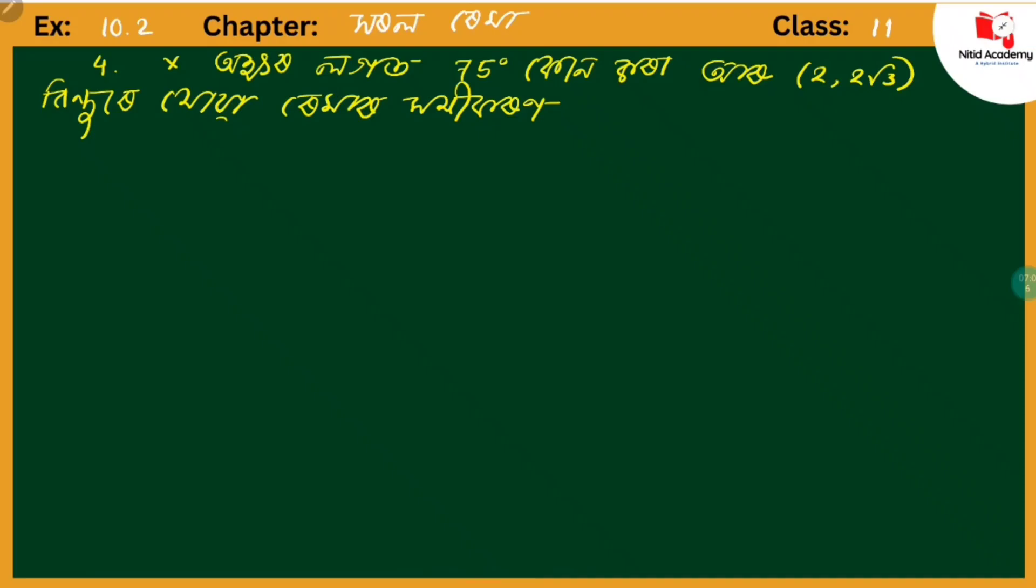NCD Mathematics Class 11, Chapter 10, Exercise 10.2, Question Number 4. The question asks to find the equation of a line that makes a 75 degree angle and passes through the point (2, 2√3).